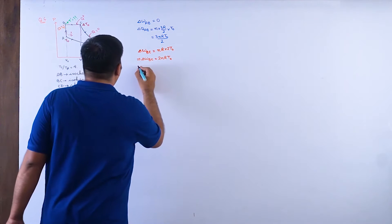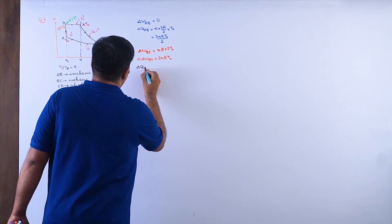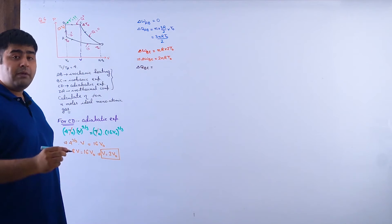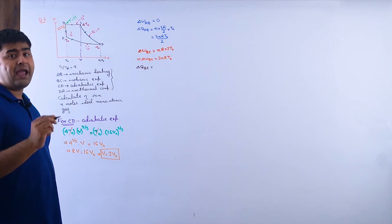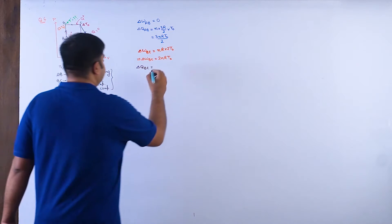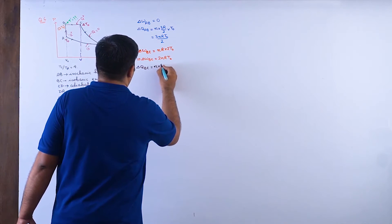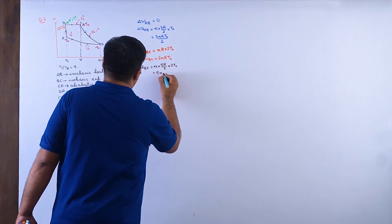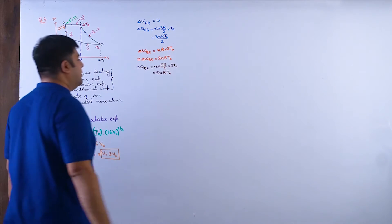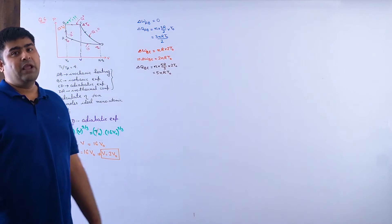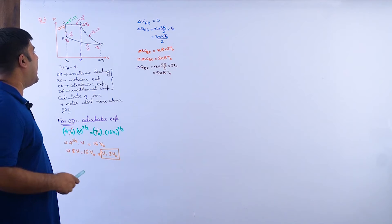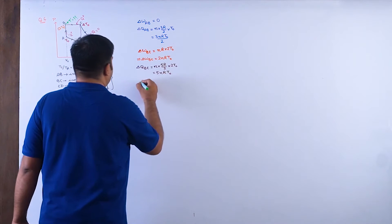Delta Q_BC: for monoatomic gas, C_P = 5R/2. So Q_BC = n·C_P·ΔT = n·(5R/2)·2T_not = 5nRT_not. This is Q positive and will count toward Q_plus in the efficiency calculation.